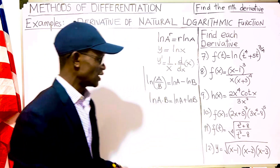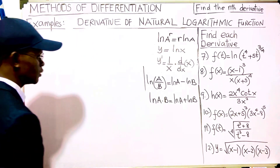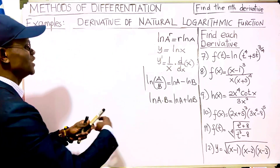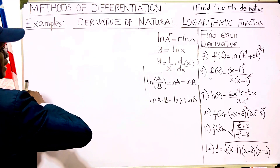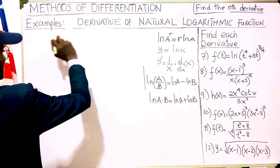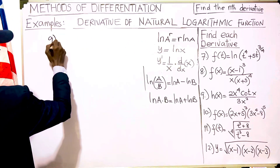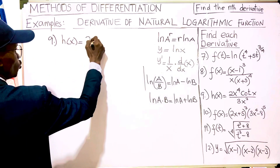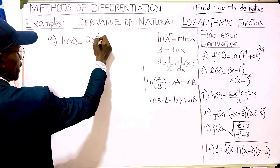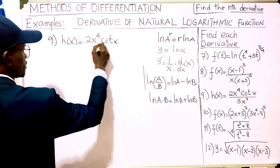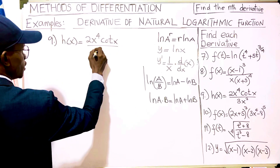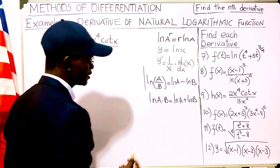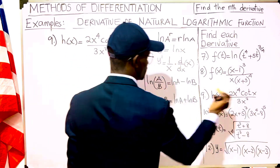We want to continue with question number nine. We did not solve question nine in the previous lesson. Question nine looks a bit easier: h(x) equals 2x to the fourth power times cot(x), over 3x squared.